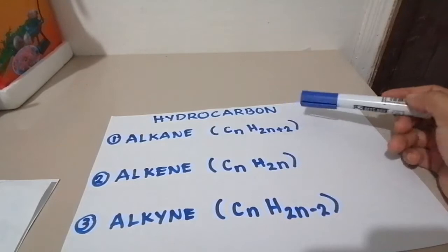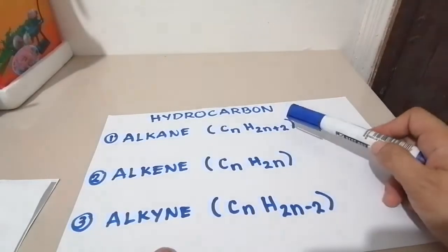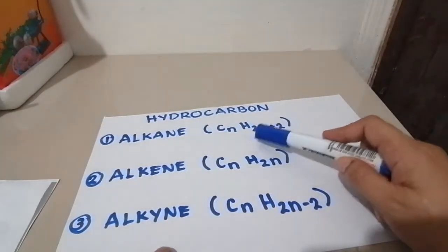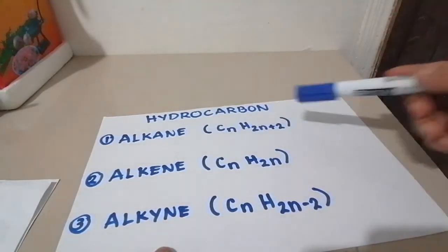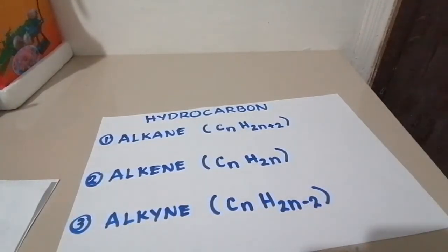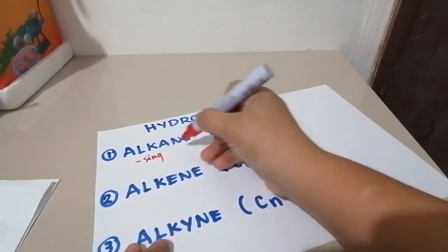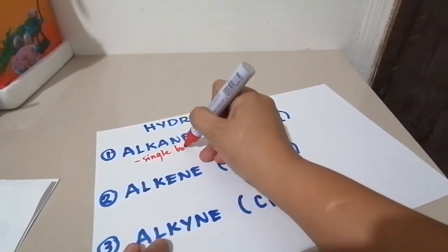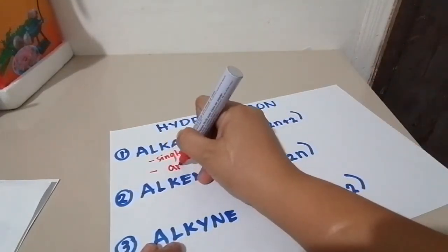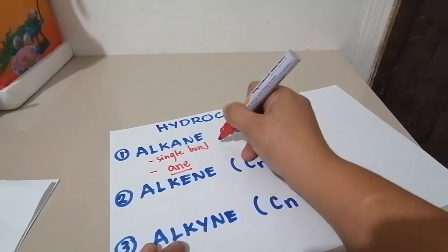For alkane, we have the general formula CnH2n plus 2. The number of carbon here, multiply it by 2 plus 2 to get the number of hydrogen. Alkanes are single bond. It always ends with suffix A-N-E.